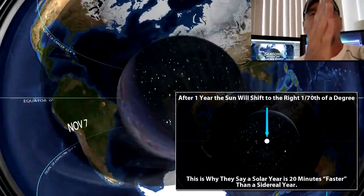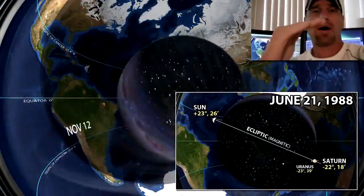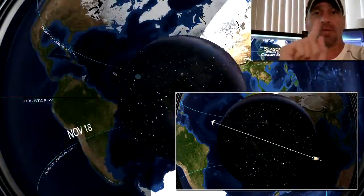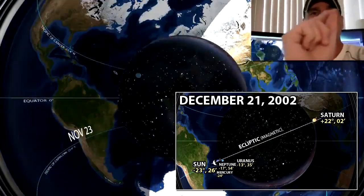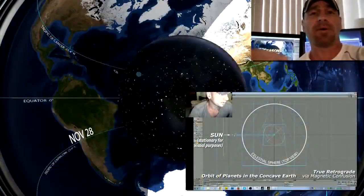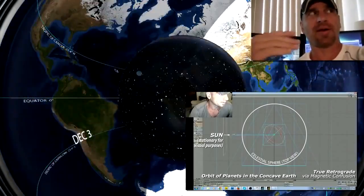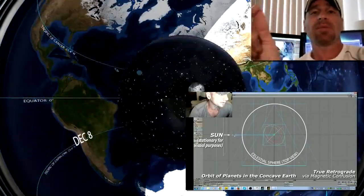The planets are all magnetically affected by the Sun, so when the Sun is inclined like that, the ecliptic of the planets, that magnetic ecliptic imaginary path, is going to be influenced by it as well. There's a real retrograde motion to the planets, not just an apparent retrograde motion caused by a supposed spinning Earth.